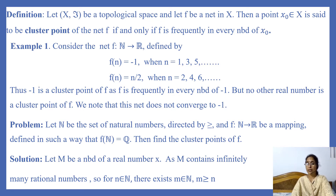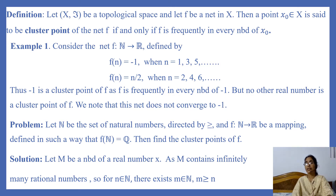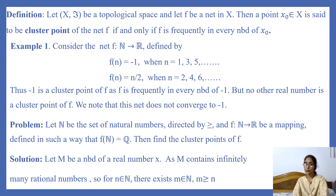Then we claim that -1 is a cluster point of this net f. Consider the neighborhood: the open interval (-2, 0). This is a neighborhood of -1. We find that f(2) = 1 does not belong to this neighborhood, but f(3) = -1 and -1 belongs to this interval. So for every even natural number n, we can find n+1 such that f(n+1) = -1, which belongs to (-2, 0). So we see that -1 is a cluster point of f, but no other real number is a cluster point of this net.